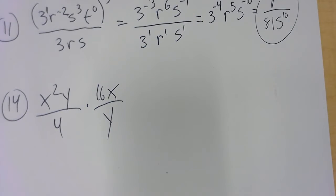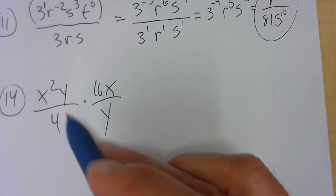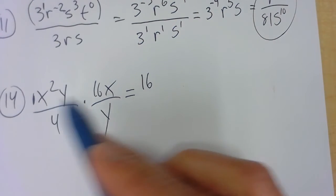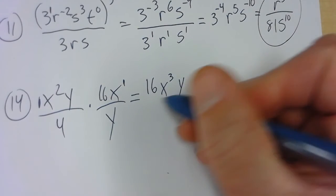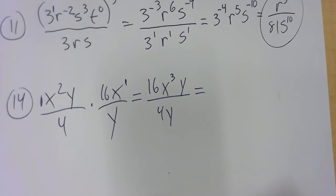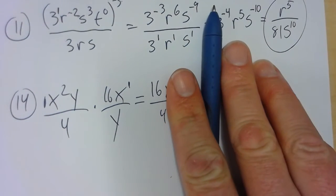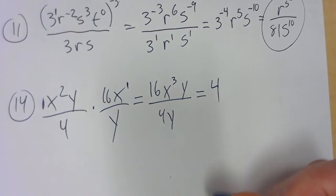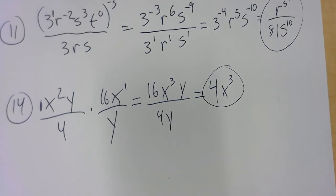The next one is a fraction. Numerator times numerator, denominator times denominator. So there's an invisible 1 out there, so it's 1 times 16, x to the 3rd. There's an invisible 1 there, and then y over 4y. Then we divide — 16 divided by 4 is 4. There's no x on the bottom, so it's just x cubed. And then y divided by y is 1. So that's the answer to number 14.